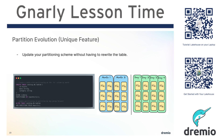Let's talk about partition evolution. Partition evolution is a feature that is unique to Apache Iceberg, and it has to deal with the way that the metadata is written. Other table formats oftentimes track the table's partitioning at the top-level metadata, and don't necessarily make additional tracking of the partitioning at the file level so that we can track multiple partitioning schemes.